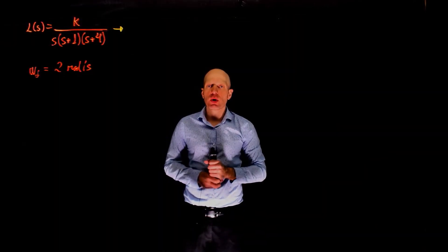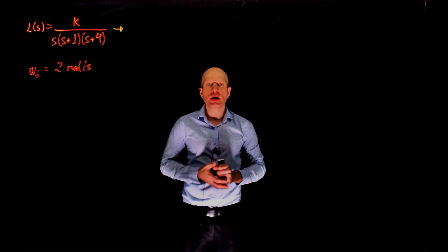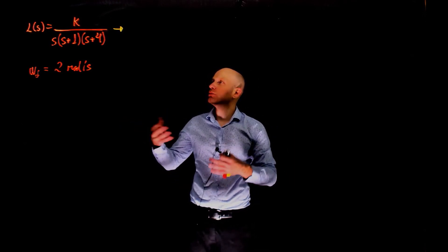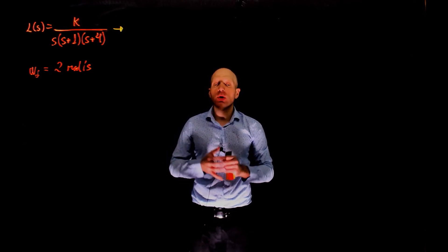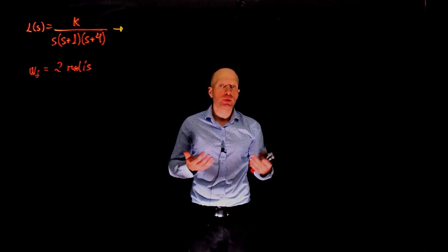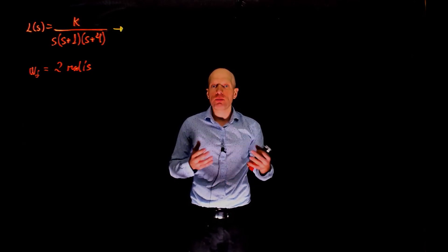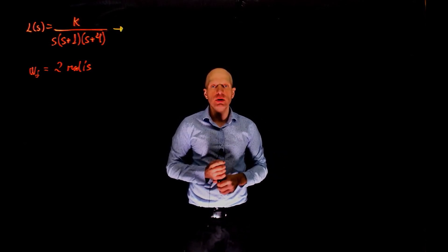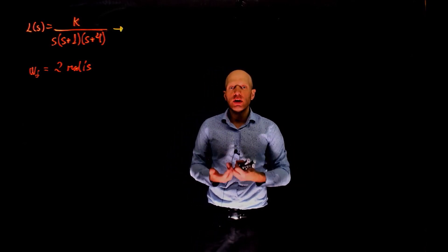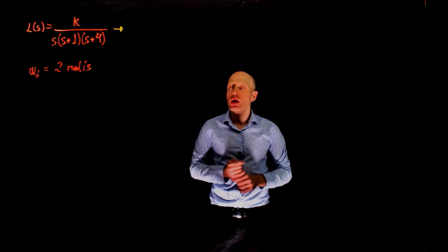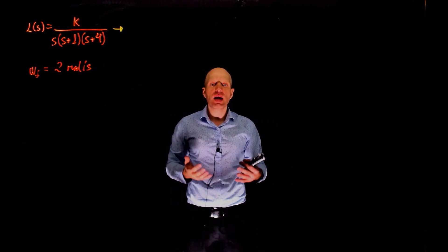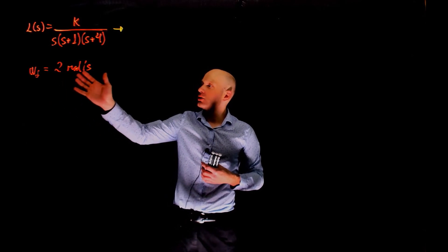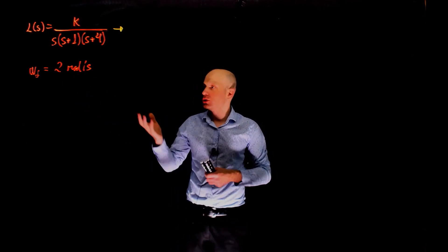In the second part of this exercise, the question is: what is the value of k that would give a gain margin of 20 decibels, as opposed to 12? We concluded from the first part that when k equals 5 the gain margin was 12 dB, and we want it to increase to 20 dB. So k should decrease. The key observation is that k does not affect the phase, only the magnitude. Hence, the frequency at which the phase reaches 180 degrees remains the same — it's 2 radians per second.